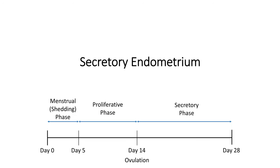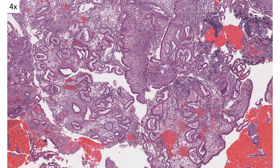Let's move on to secretory endometrium — what we see in the luteal phase after ovulation until the start of menses. At low power on this biopsy, in contrast to the proliferative endometrium, the biopsy looks very pink because it's not quite as cellular and has more cytoplasm overall. There is cleared-out space between the glands — this is edema in the stroma, very common especially early in the secretory phase. The gland contour also looks different: instead of those nice round glands, we have irregularly shaped glands that can look a little bunched together. That's an innate feature of secretory endometrium and does not necessarily indicate hyperplasia.